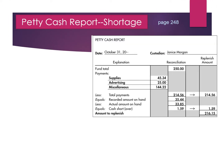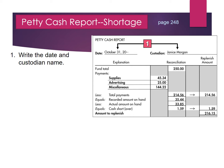Preparing a petty cash report when we have a shortage. Step 1: we will write the date and custodian name on the petty cash report. Step 2: we will write the fund total. The fund total is the amount that is recorded in the petty cash fund account. In this case, we have $250 in our petty cash fund, so we will write $250.